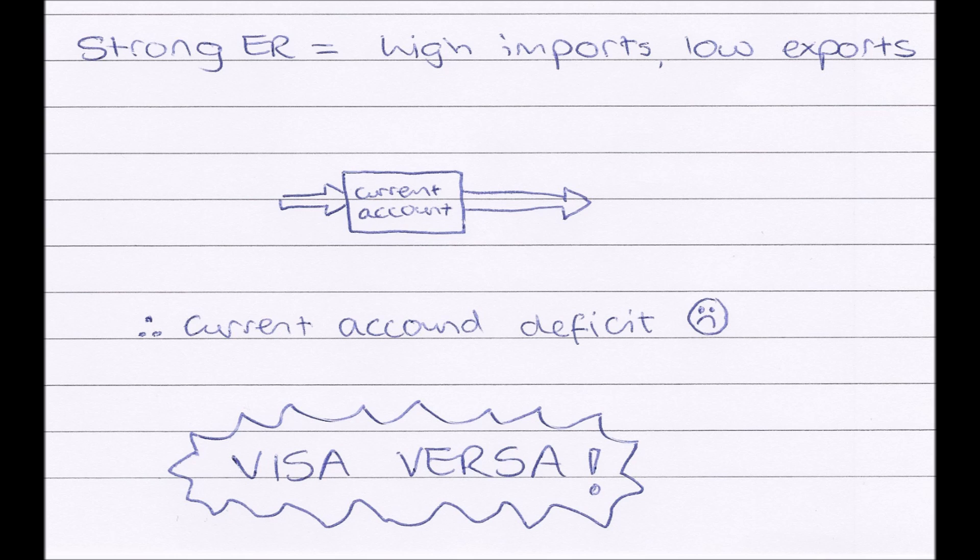Finally, one more negative implication of a strong exchange rate. When there is a strong exchange rate, there are high imports and low exports. So we've got lots of money leaving the country through imports and not much entering through exports. Therefore, our inputs into our current account are less than our outputs, so we have a current account deficit. And the final point is vice versa—everything is the exact opposite if there was a weak exchange rate. So I'd advise that you watch the video again and change everything from strong to weak, and change everything from low to high.